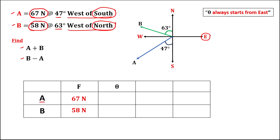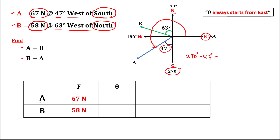To find theta for vector A, starting from east, observe that the quadrant positions are 90, 180, 270, and 360 degrees. The given angle is outside the rotation, so we need to subtract these two angles: 270 degrees minus 47 degrees. Therefore, theta for vector A is 223 degrees.